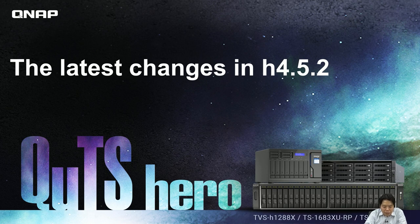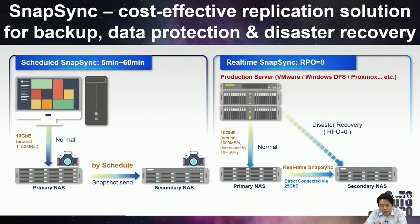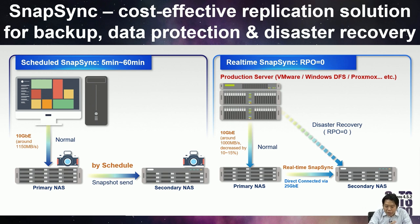About this new release, there are two important features and several updates. The first one is SNESync. It's a cost-effective, easy-to-use replication solution for backup, data protection, and disaster recovery. It's configured through the mirror relationship between two NAS devices. It can sync a replica to keep it up to date with changes being written to the primary. The mirror of enterprise data is created in a secondary storage site at a remote location, so you can fail over the data from secondary in the event of a disaster at the primary site.